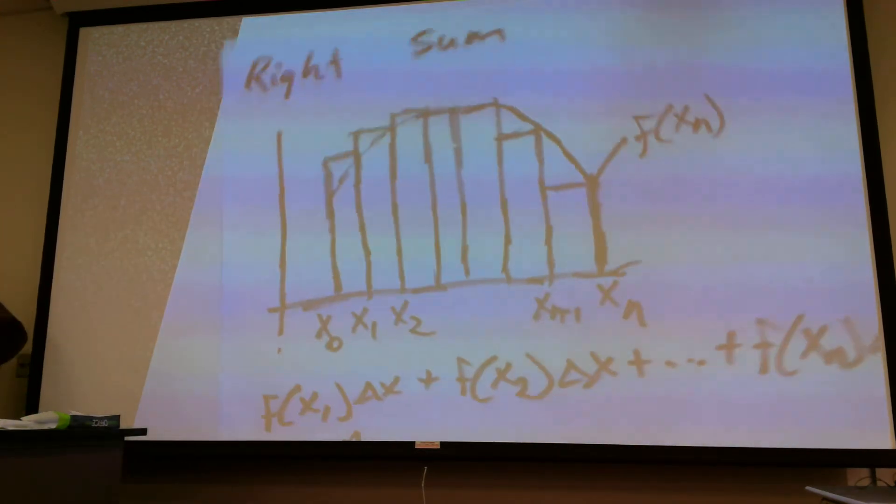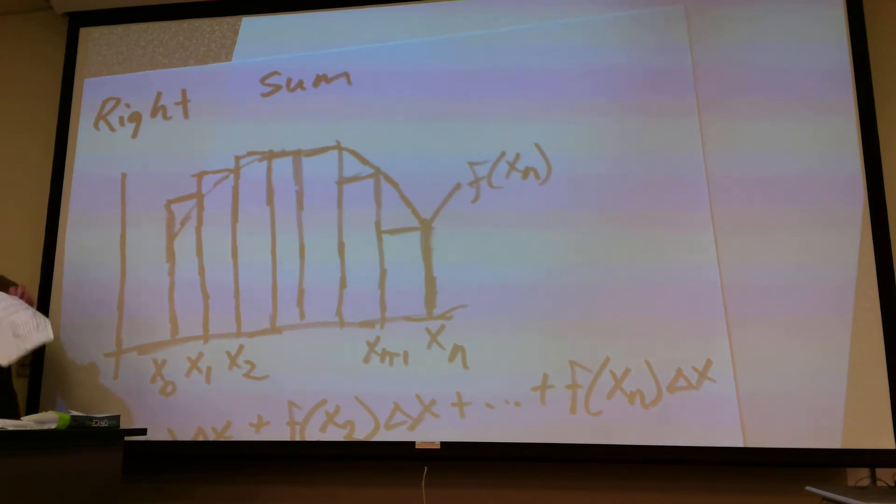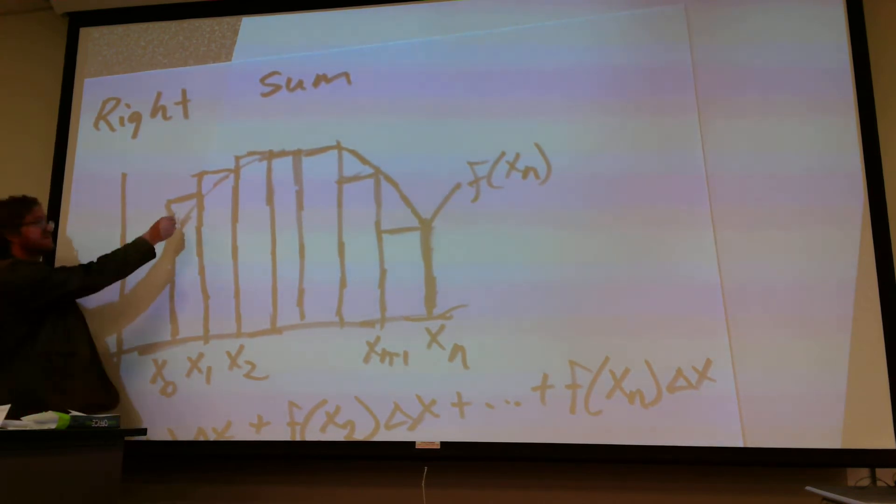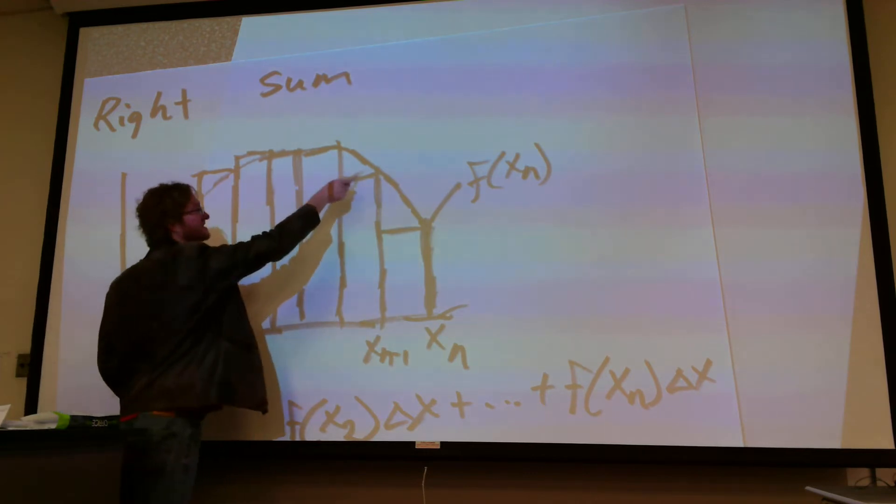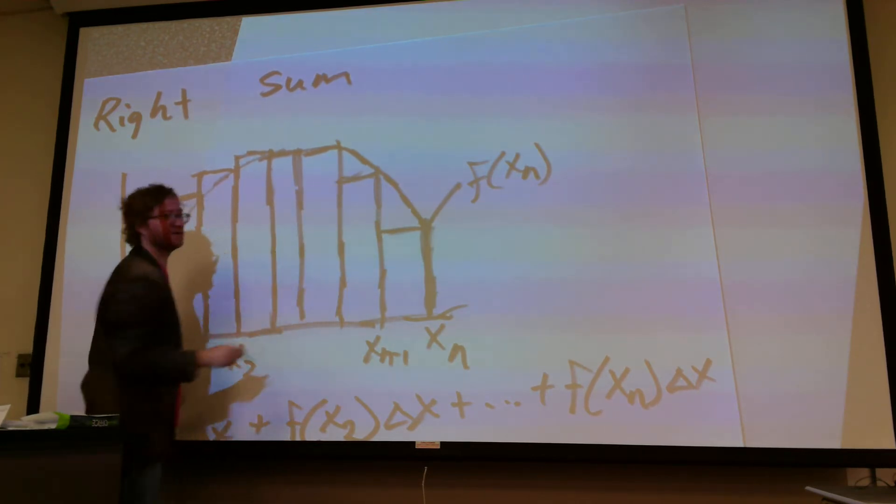And then, if we consider right sums, now this has too much area right here, this has too much area right here, also too much, but it's lacking in area right here and right here.